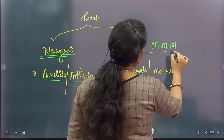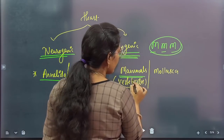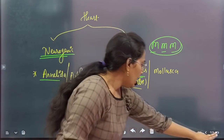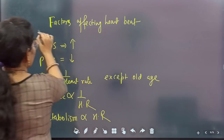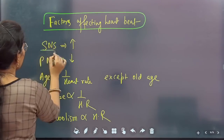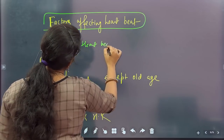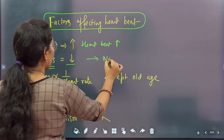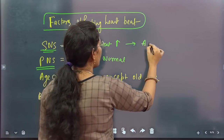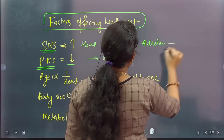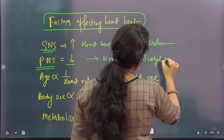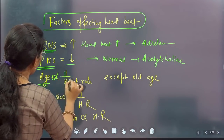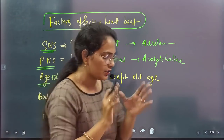But in cardiac arrest, the heartbeat stops completely and the person can die immediately. Heart is myogenic and is found in all vertebrates. Regarding factors affecting the heart: the sympathetic nervous system increases heart rate and releases adrenaline, while the parasympathetic nervous system normalizes heart rate and releases acetylcholine. Age is inversely proportional to heart rate — as age increases, heart rate decreases.